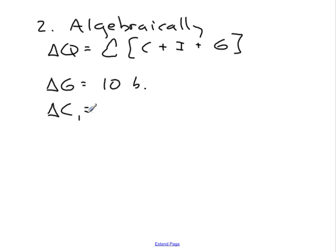And then if, for example, the MPC is equal to 0.8, then the road crews have $10 billion more in income, and they go out and spend 80% of that.